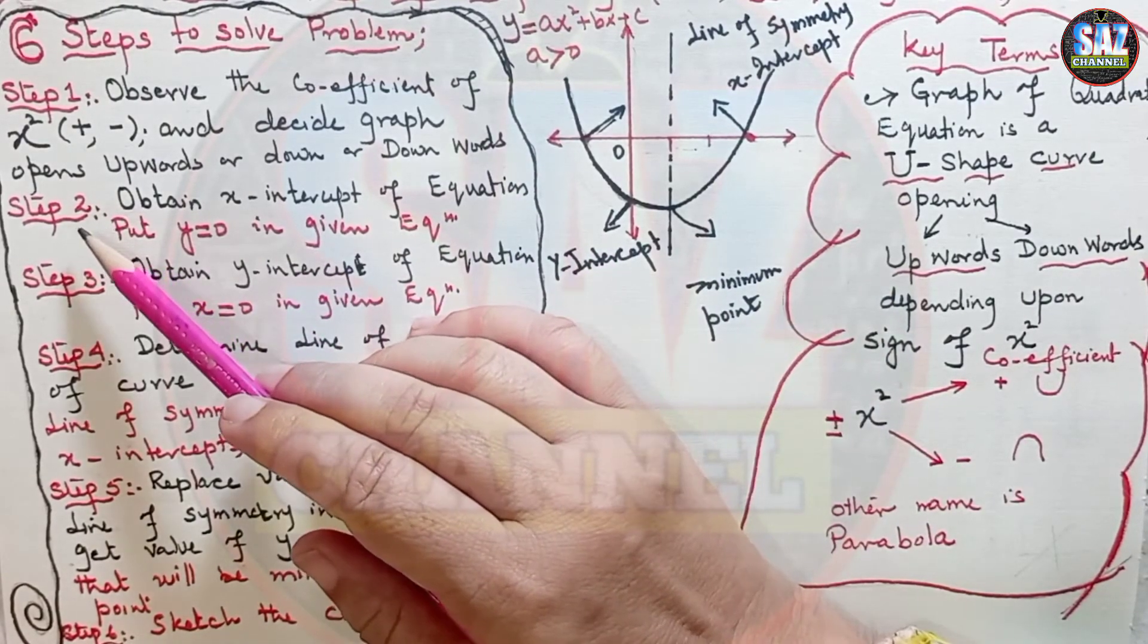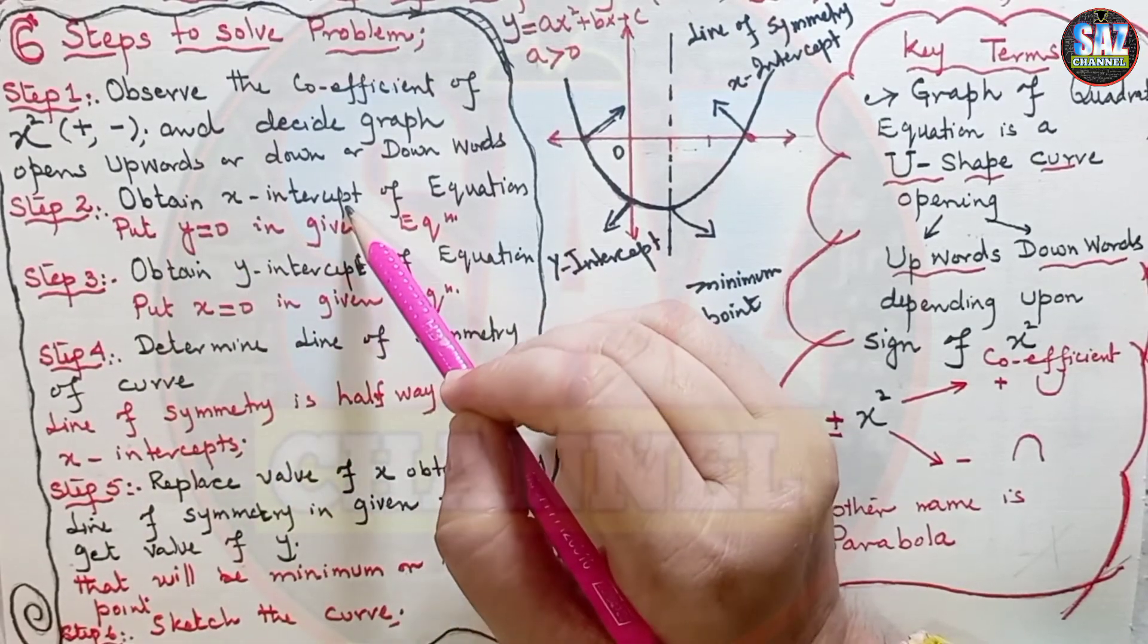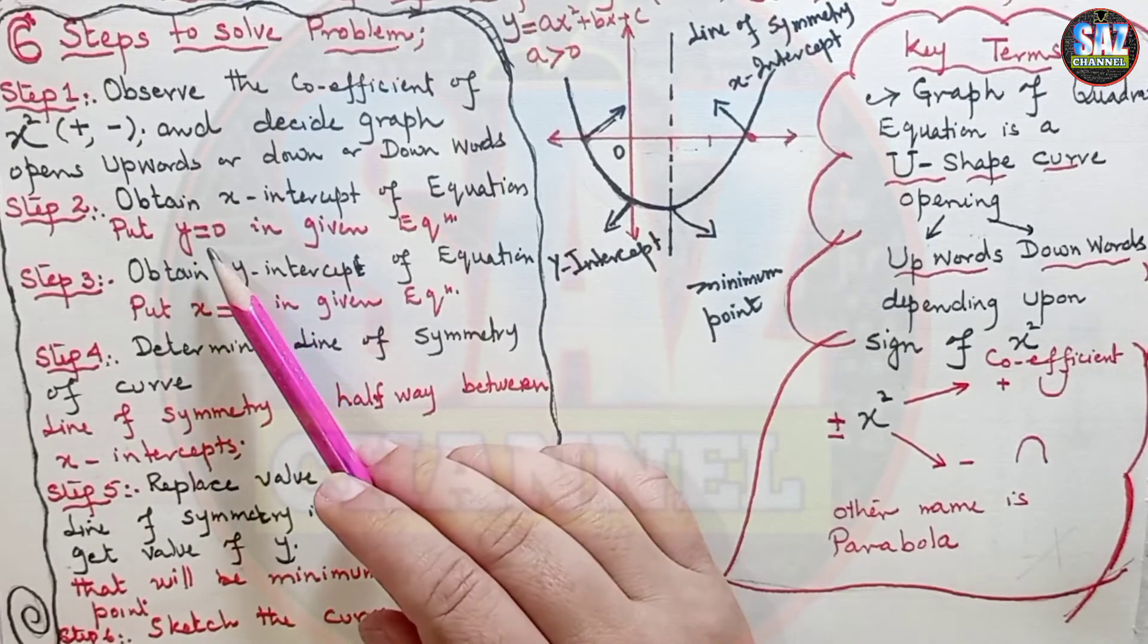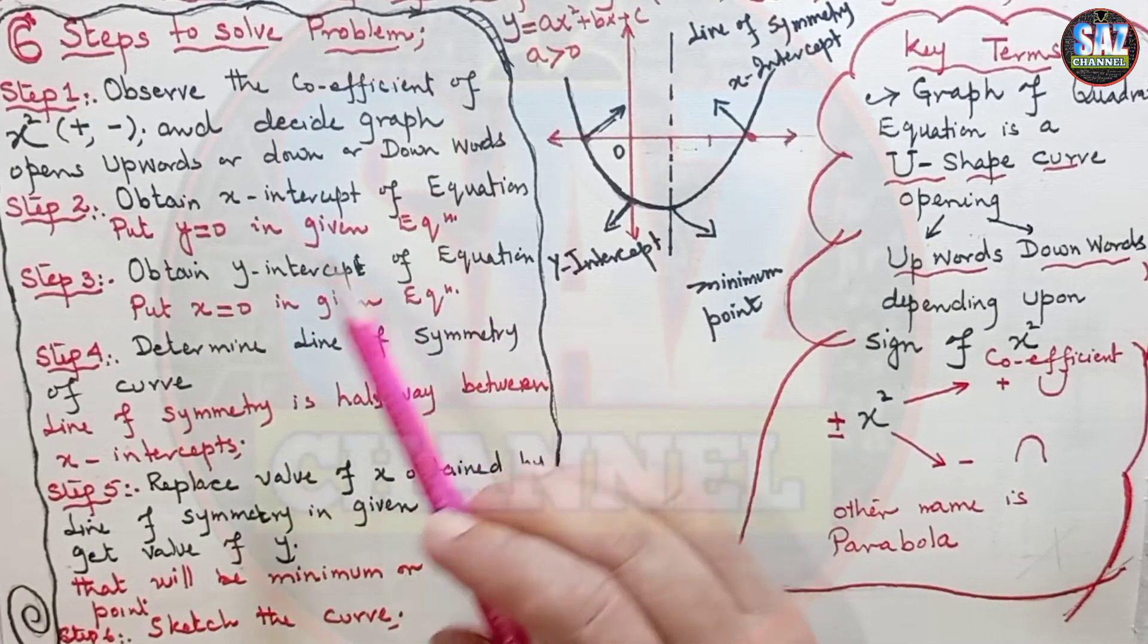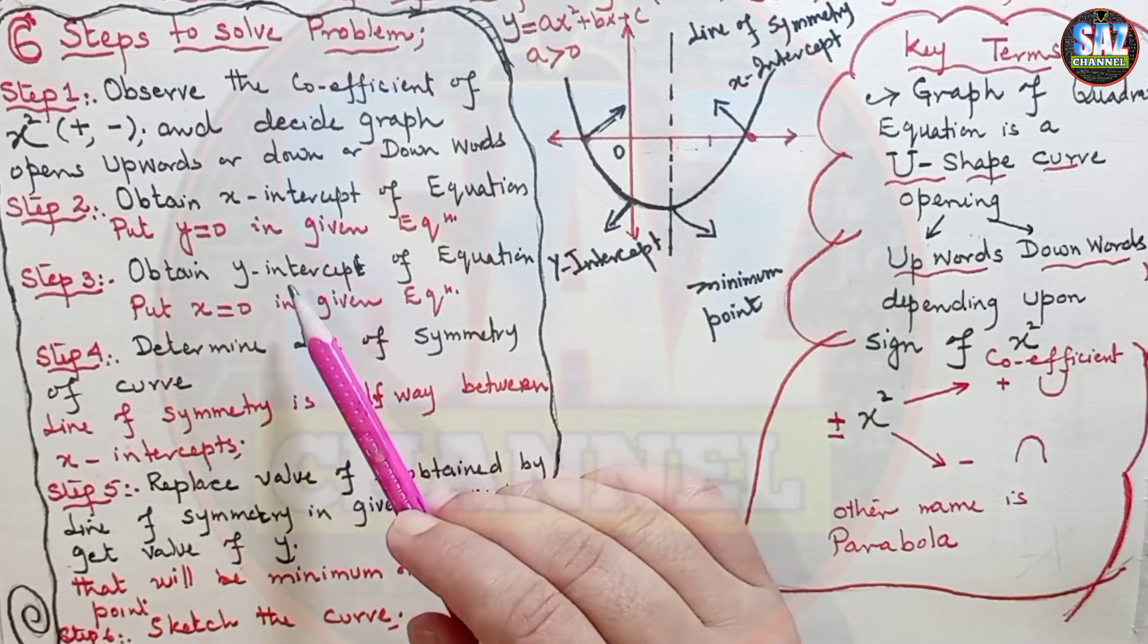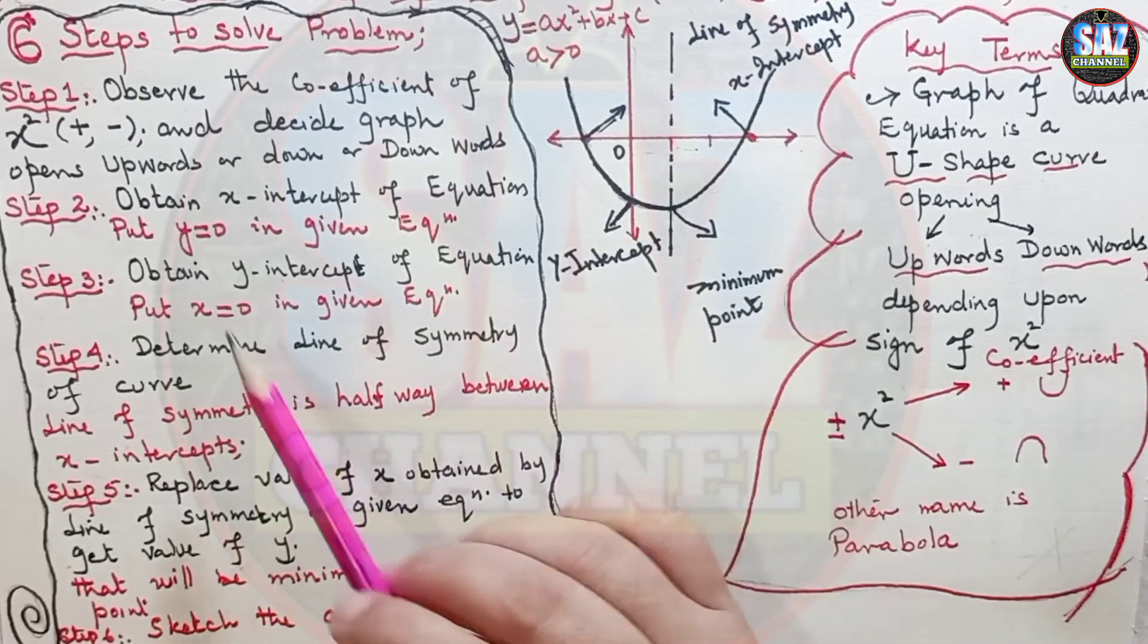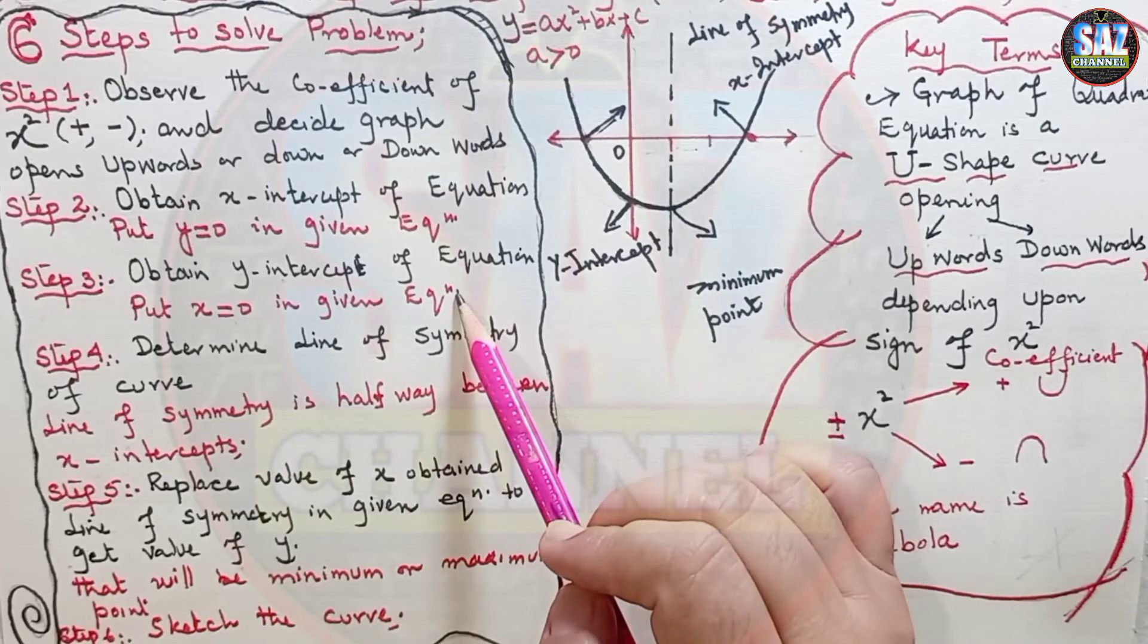Then the second step is, from the given equation, obtain x-intercepts of the equation. Recall that how to obtain x-intercepts? We have to put y equals to zero in the given equation. Then what we have to do in step three? We have to obtain y-intercept of the equation. And for y-intercept, we have to put x is equal to zero in the given equation.